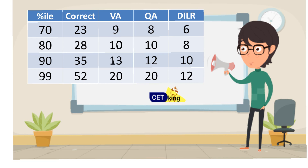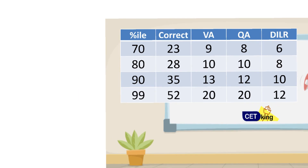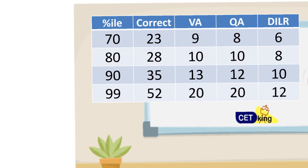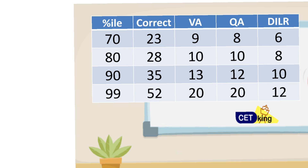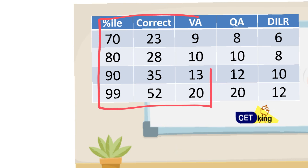Now let's move to the most important part: how many questions do you need to attempt? 70 percentile requires only 23 questions correct. 80 percentile is 28 questions correct — not much difference. 90 percentile is 35 correct. And there's a huge jump to 99 percentile because of the bell curve. In terms of correct answers in verbal: 70 percentile is approximately 9 correct, 80 percentile is 10 correct, 90 percentile is 13 correct, and 99 percentile is 20 correct.